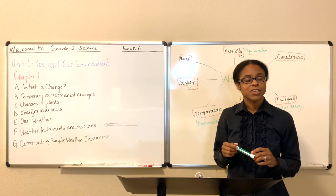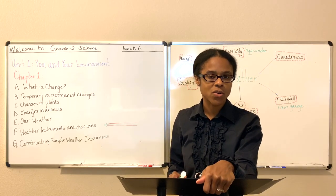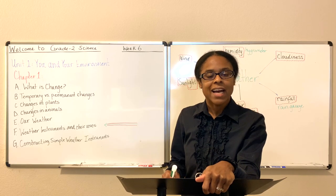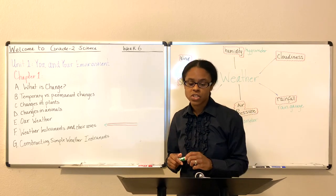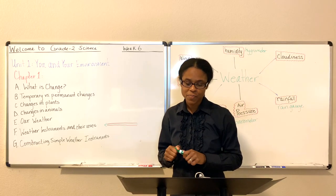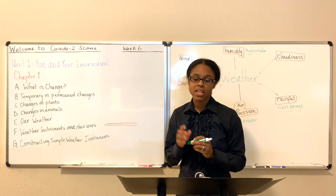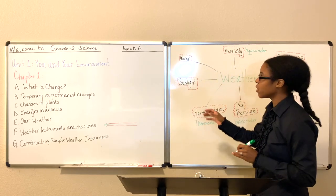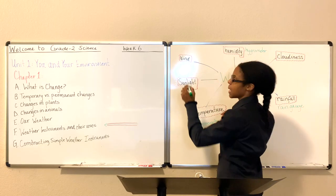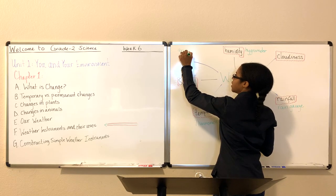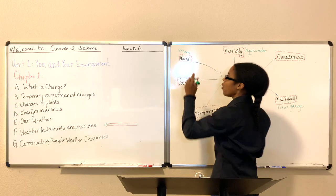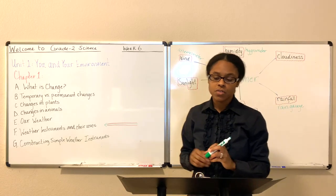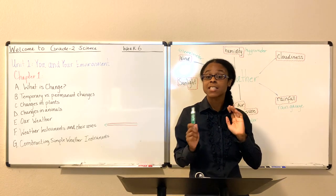You'll hear on the news someone say the wind is blowing 35 miles an hour east. Well, it's because they have the equipment to do that. There's also the anemometer, and this is going to measure the speed of wind. The anemometer measures speed and the barometer measures pressure. It's spelled A-N-E-M-O-meter. This is the instrument used to measure specifically the speed of wind.